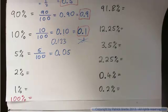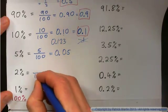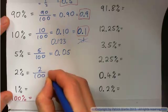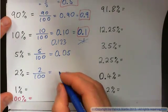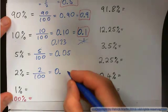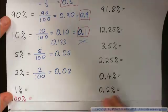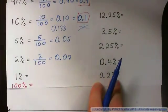2%. 2% of people have a black colored car. 2 per 100. Per cent. 2 out of 100. And that is 0.02.